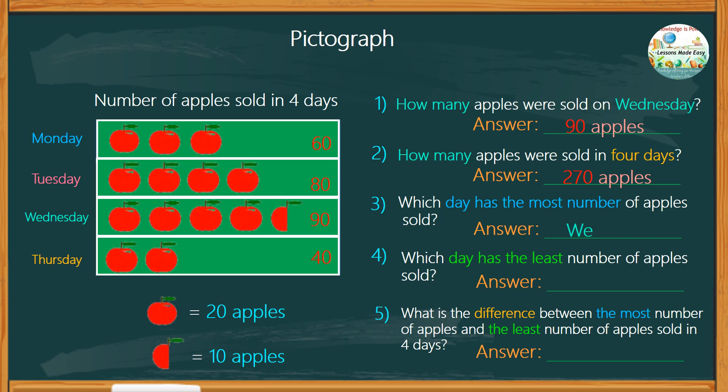And clearly, Wednesday has the most number of apples sold, and Thursday has the least. The difference between the most number of apples to the least number of apples sold is 50. It is pretty easy to interpret a picture graph, don't you think?